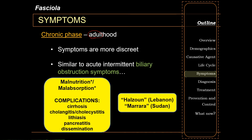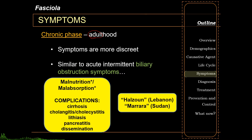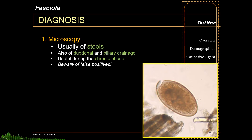There is a strange phenomenon usually seen in the Middle East and parts of Africa called halzoun or marara. This is the attachment of live adult flukes to the posterior pharynx, causing hemorrhagic nasopharyngitis and sometimes dysphagia. This is usually due to ingestion of raw infected liver containing adult worms, not through ingestion of the metacercaria as described in the life cycle.